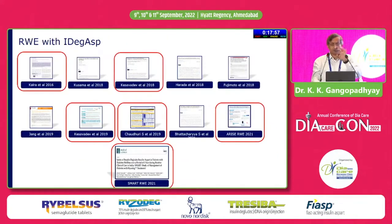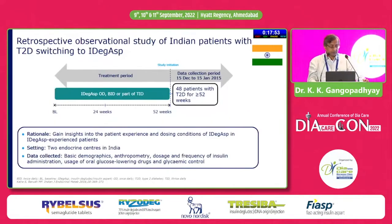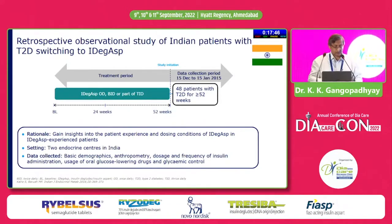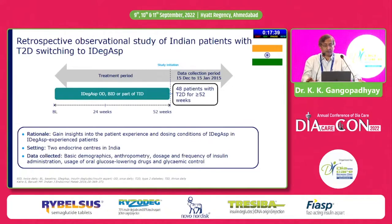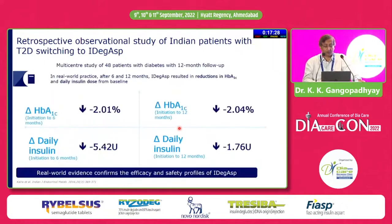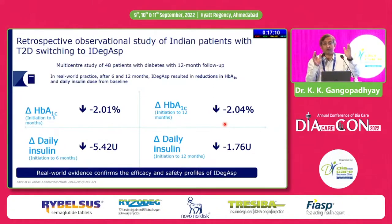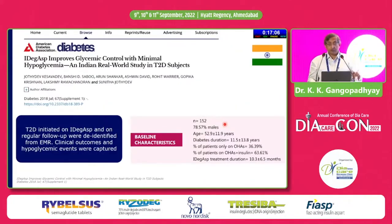There are multiple real-world evidence studies; I am just going to tell you about a few of them. This first one is by Dr. Kalra and Manush Patim Barua — the pointer is not working. This was a retrospective observational study of patients with type 2 diabetes, whether they are on tablets or insulin, switching to IDegAsp, about 48 patients for about one year. The HbA1c drop is significant. Importantly, this was achieved at a lower insulin dose, and most of the real-world evidence supports this.